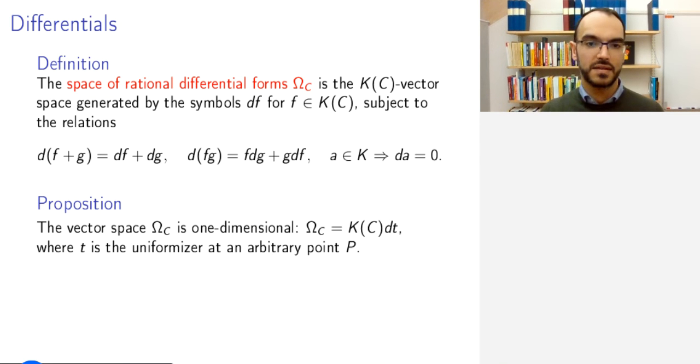And the claim is that the vector space ω_C for a curve C, and now, henceforth, I will be assuming that C is also smooth. Then, ω_C is one-dimensional, and it is spanned by dt, where t is the uniformizer at any point p.